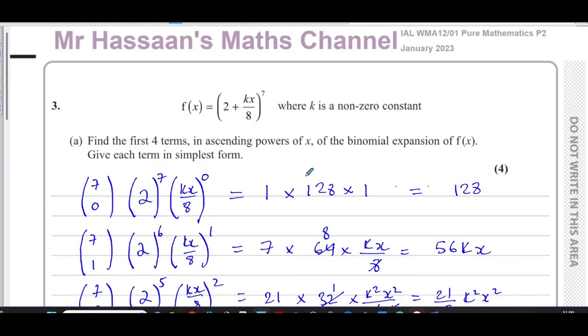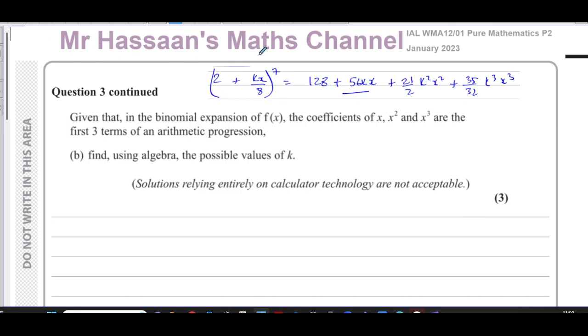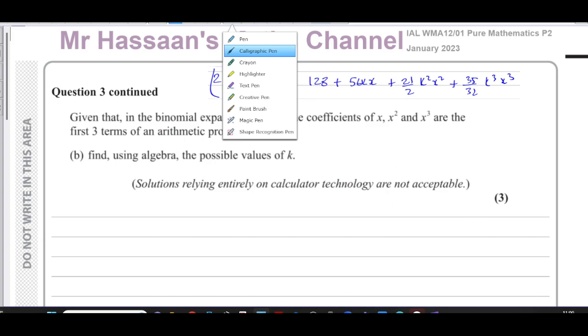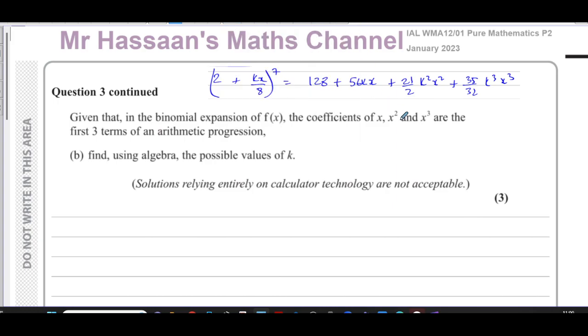Now we're going to go on to part B. If we look at part B, it tells us that given that the binomial expansion of f of x, which is shown over here, in the binomial expansion of f of x, the coefficients of x, x squared, and x cubed are the first three terms of an arithmetic progression. So it's like an arithmetic series, progression, sequence, same kind of idea.